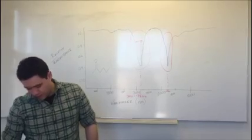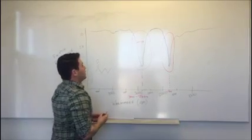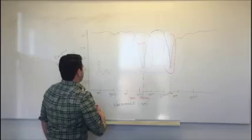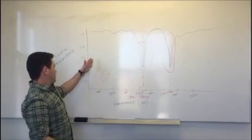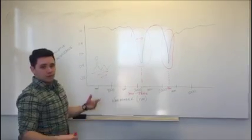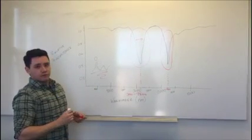Then again, we can consult our chart and look for something that goes 2800 to 3000, and that is alkanes. It makes sense because our molecule we're given is literally just an alkane with a carbonyl group. It's a ketone. So it's pretty simple stuff.